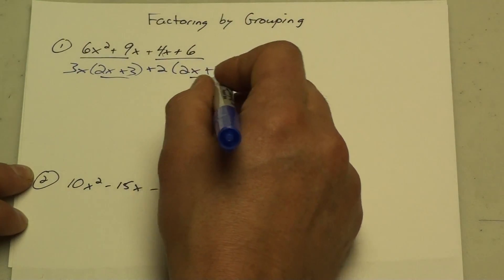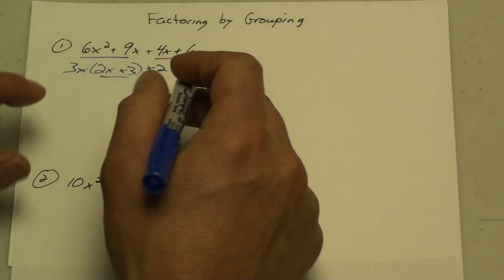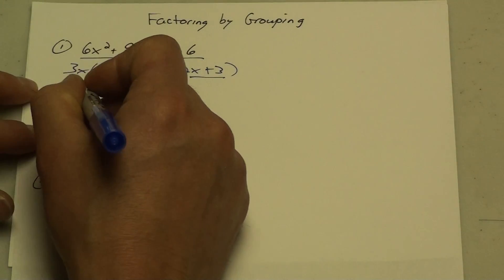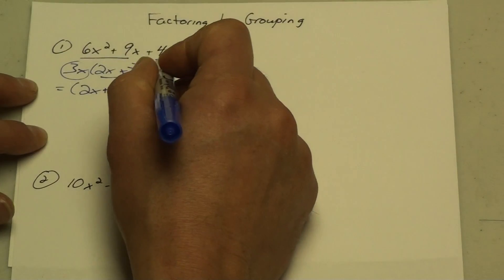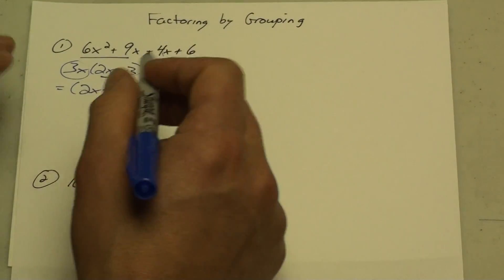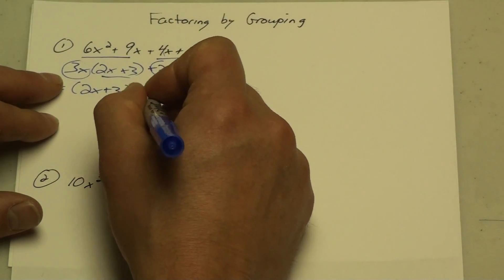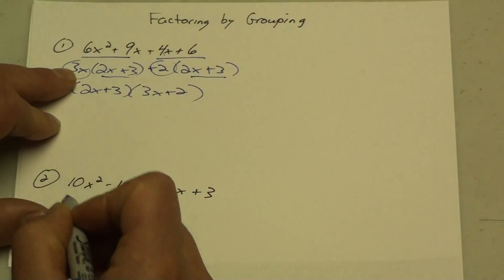Now, both these brackets need to be the same, and if they're the same, I can do binomial common factoring and put them in front, and then you'd have your leftovers when you divide both things by 2x plus 3, being 3x plus 2 in your second set of brackets.